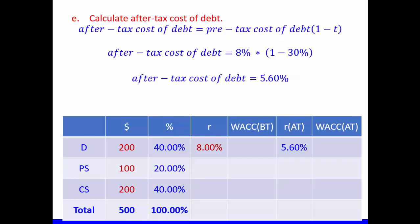The next part is to calculate the after-tax cost of debt. The formula is: pre-tax cost of debt multiplied by (1 minus tax rate), so 8% × (1 − 0.30) = 5.6%. Remember that the pre-tax cost of debt is always higher than the after-tax cost of debt, because we multiply by (1 minus the tax rate).